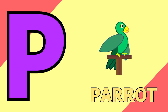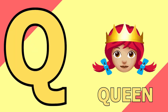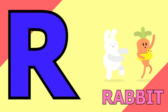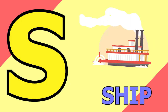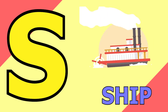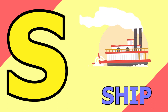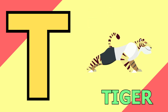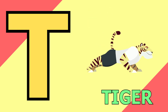P for parrot, parrot means tota. Q for queen, queen means rani. R for rabbit, rabbit means kargosh. S for ship, ship means ahaaj.